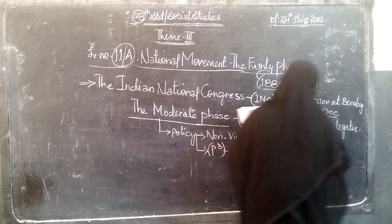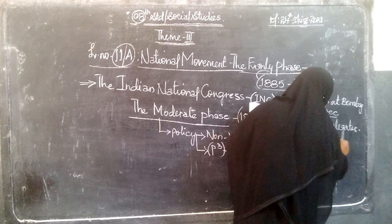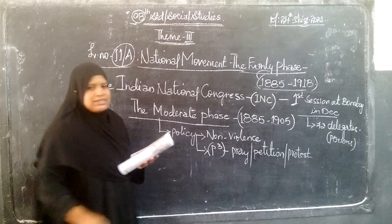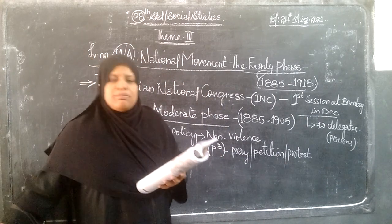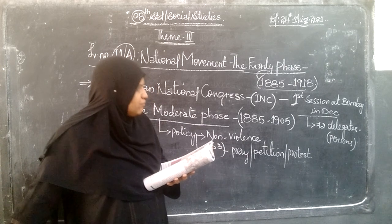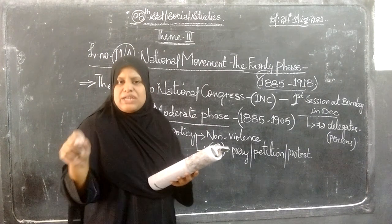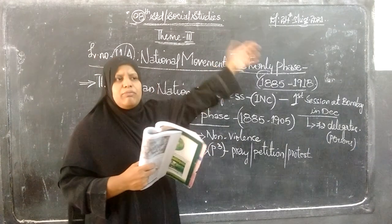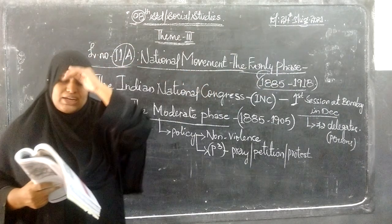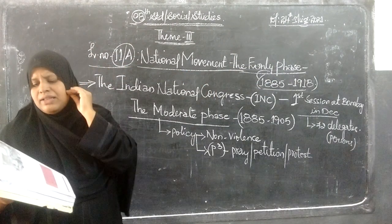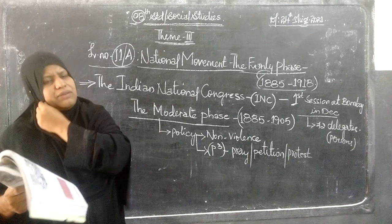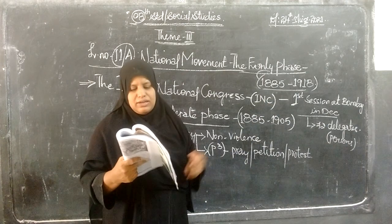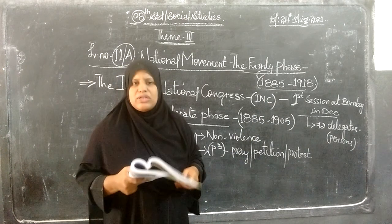The first INC session was set up in the Bombay Presidency in December 1885, attended by 72 delegates from different provinces — from Bombay, Madras (Chennai), Calcutta, and all different parts of the country. The people attended this Congress session in 1885 at Bombay.